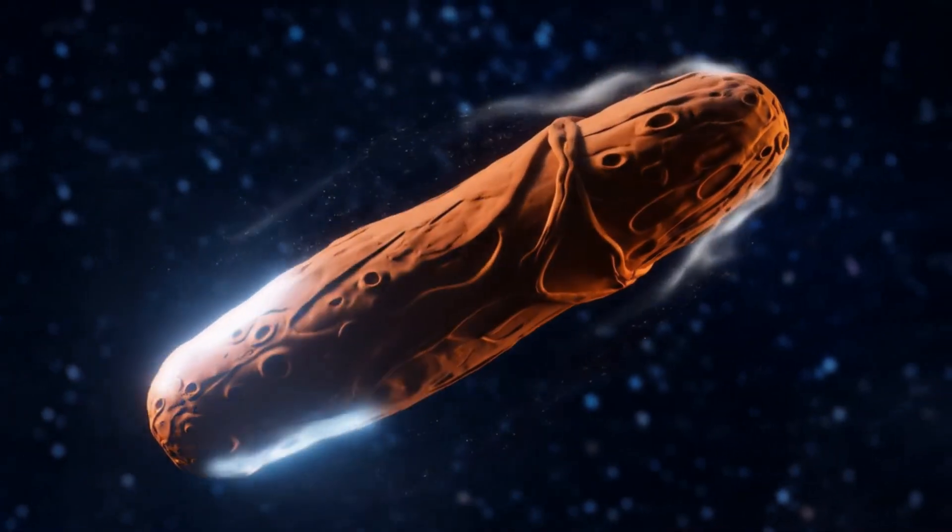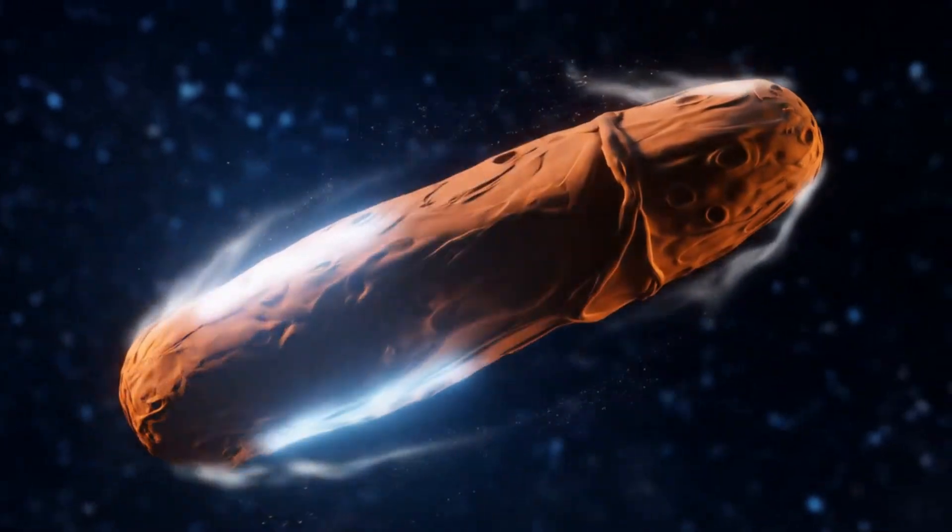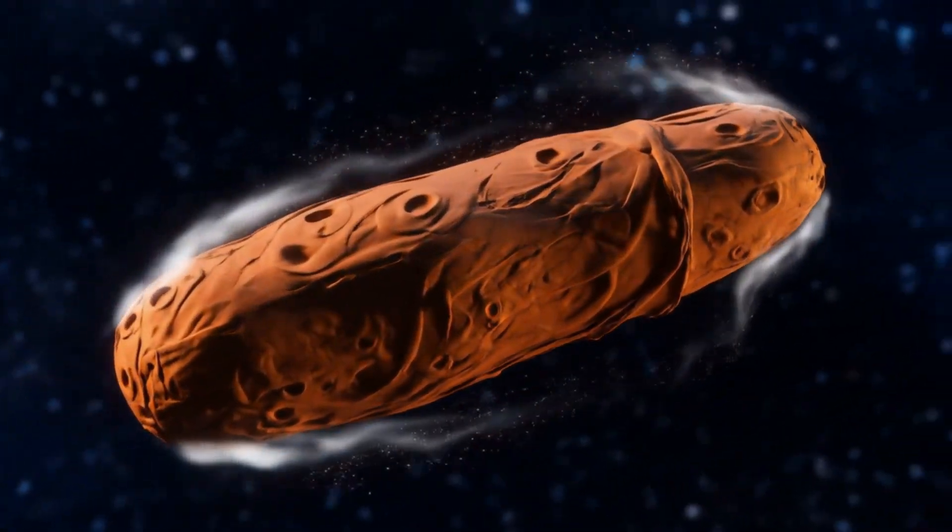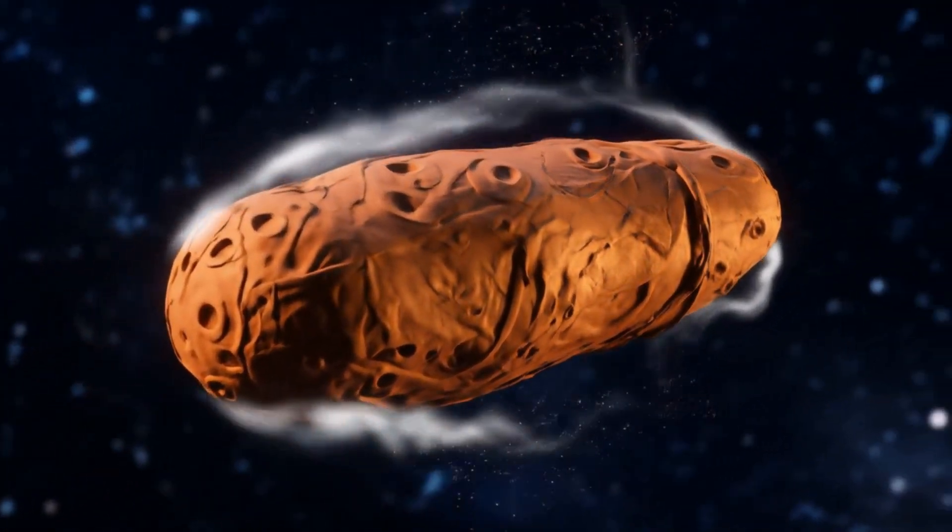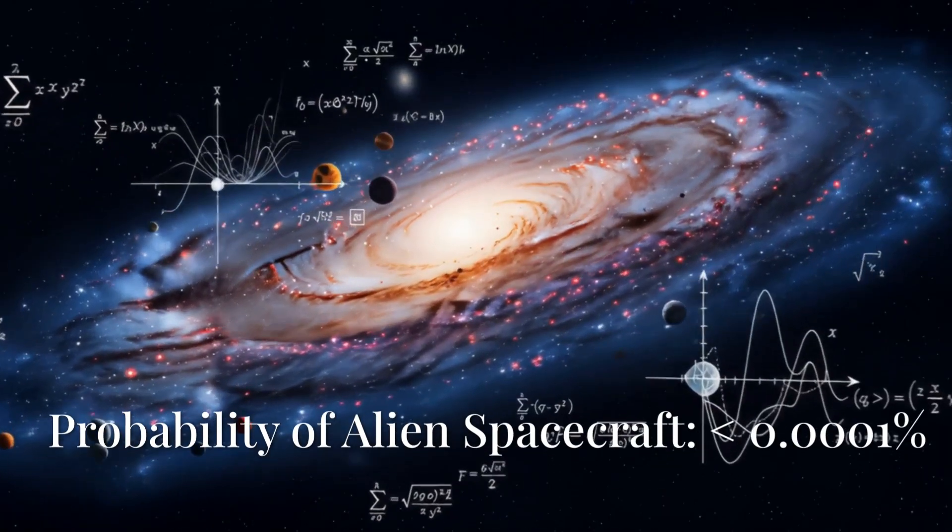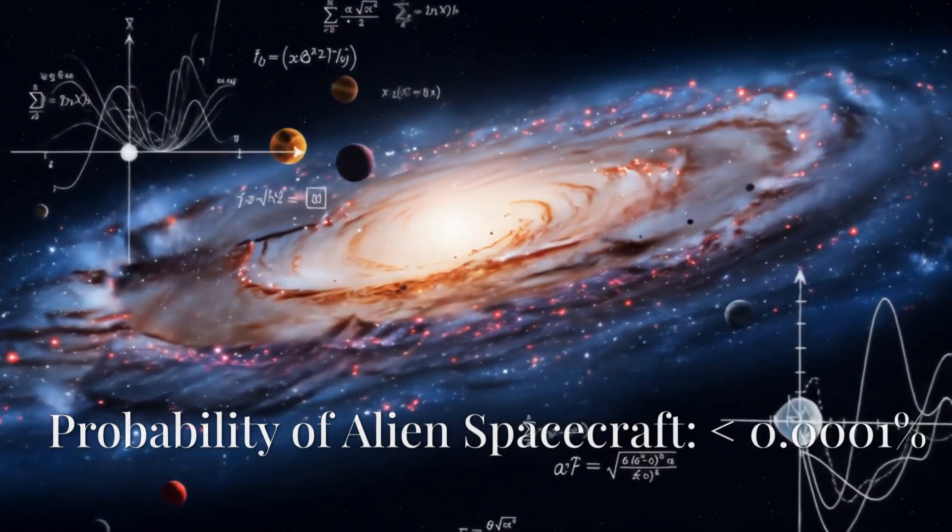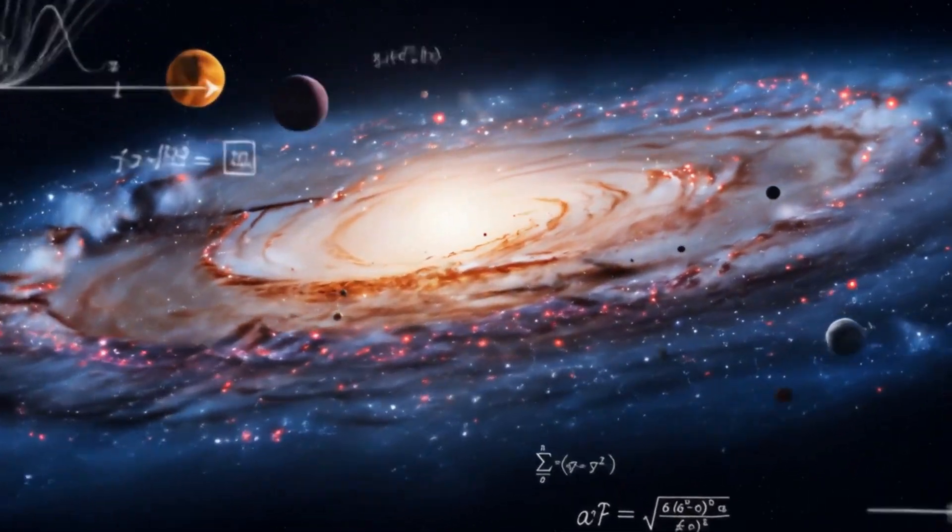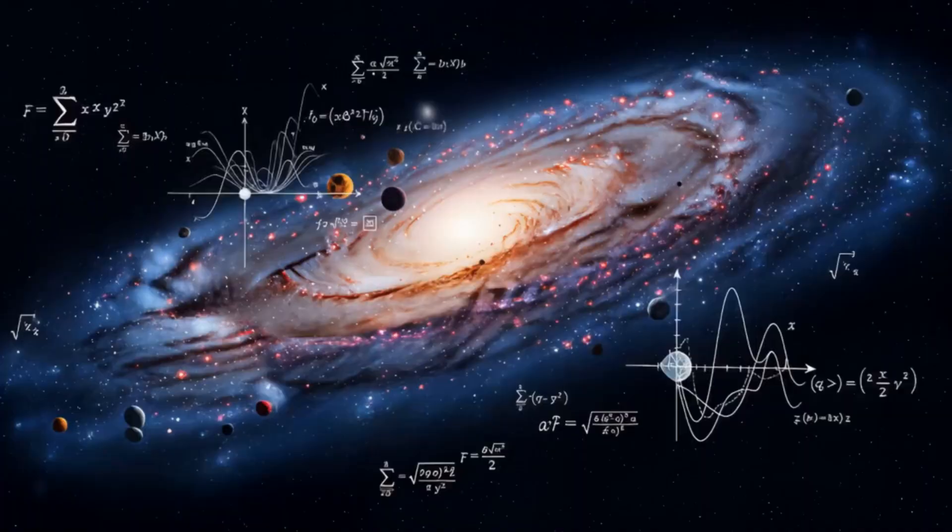While Oumuamua did show unusual features like chaotic rotation and unexplained acceleration, these likely result from natural processes. The probability that the first interstellar objects we discover are alien spacecraft, rather than natural comets, is astronomically small.